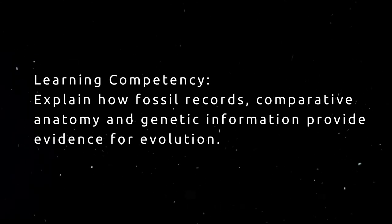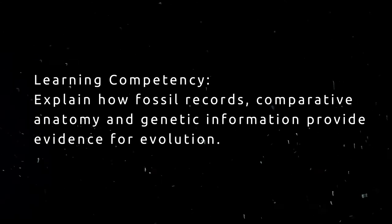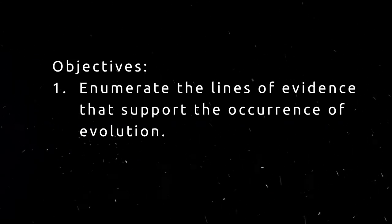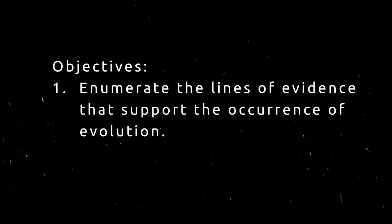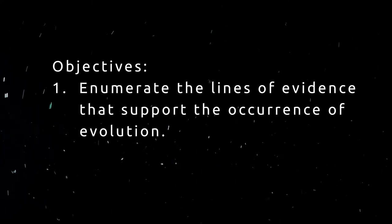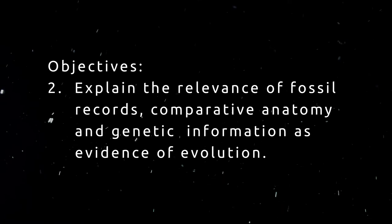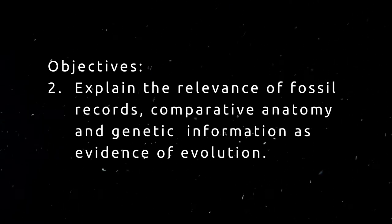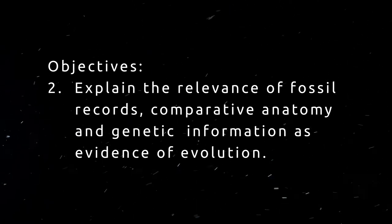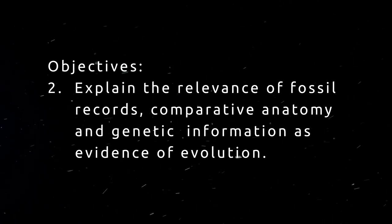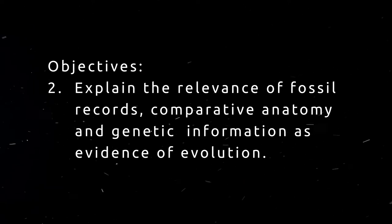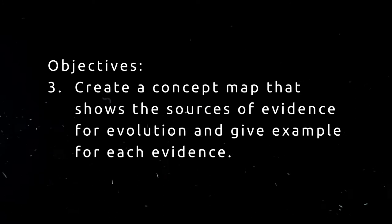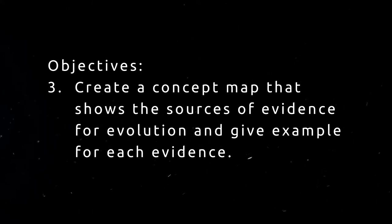We have three specific objectives. First, enumerate the lines of evidence that support the occurrence of evolution. Second, explain the relevance of fossil records, comparative anatomy, and genetic information as evidence of evolution. And third, you are going to create a concept map that shows the sources of evidence for evolution and give examples for its evidence.